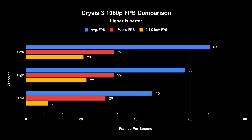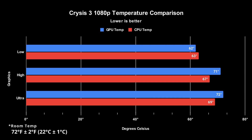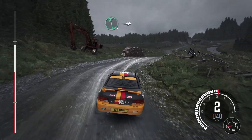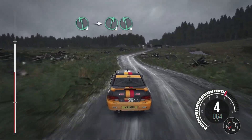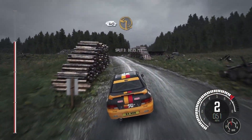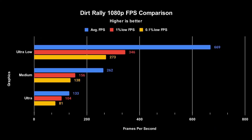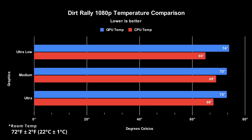Even though the 0.1% low FPS for the ultra setting measured 8 FPS, I think I'm still playing ultra because if you're playing Crysis 3, you're probably playing for the graphics. As we move up in graphics settings the system does get warmer, but none of these temperatures are alarming. Next, I tested the racing game Dirt Rally using the in-game benchmark, and it performed the best out of any game I tested — crushing the ultra-low graphics setting with an average FPS of 669. For this game I'd likely play at medium to ultra-low settings, as I care more about smooth gameplay. The temperatures for all three graphics settings are more or less the same.